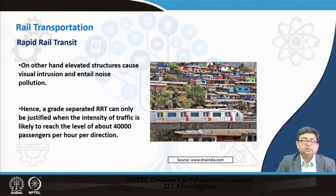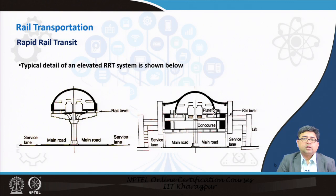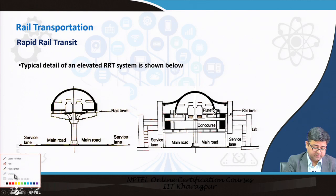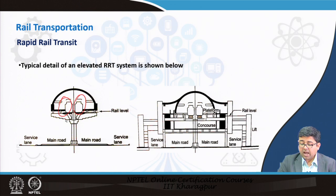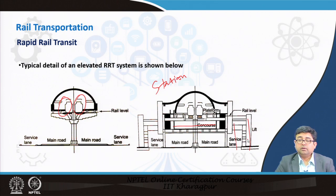Overground metro rail systems may create noise and are not always visually appealing. A typical cross-section of an elevated metro rail system and an at-grade metro rail system are shown here. For a metro rail system you need enough space for two lines — up and down — and at a station you need a concourse level with all amenities such as lifts and stairs.